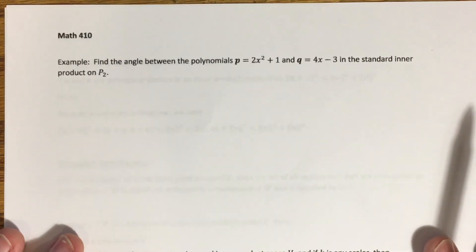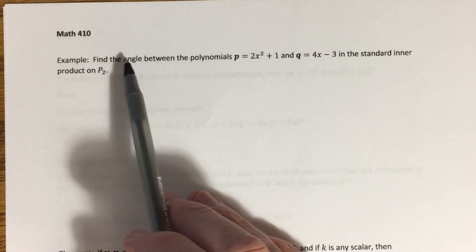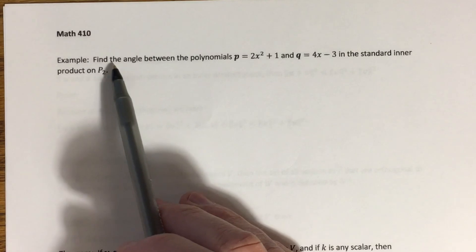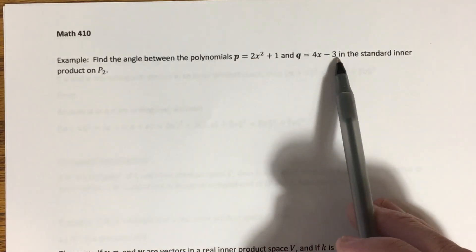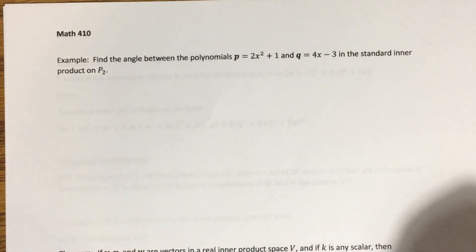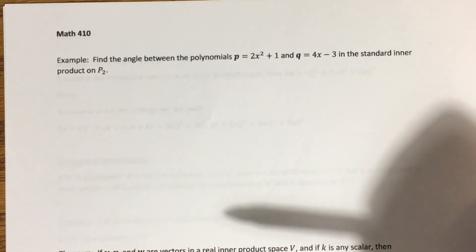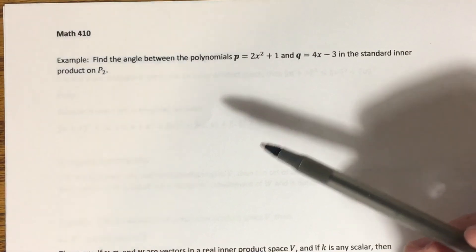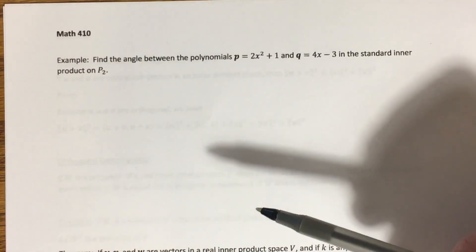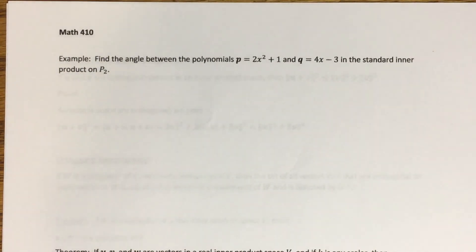In the next video, we'll work through an example: determining the angle between two polynomials in P2 — specifically 2x² + 1 and 4x − 3 — using the standard inner product on P2. It's very difficult to visualize this geometrically, but we'll determine what that angle is, and then we'll see why we'd care about something as abstract as an angle between two matrices, polynomials, or vectors in any inner product space. We'll see you next time.